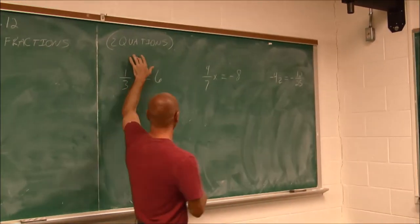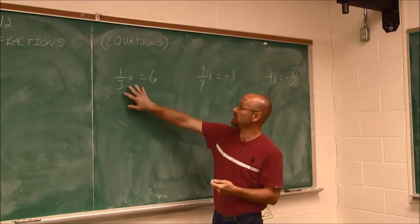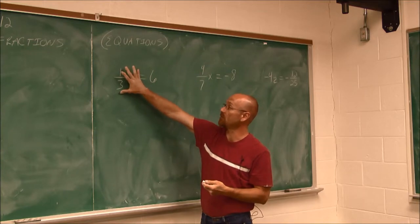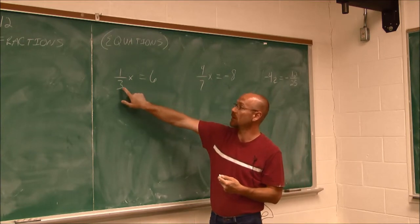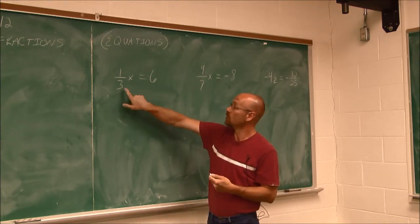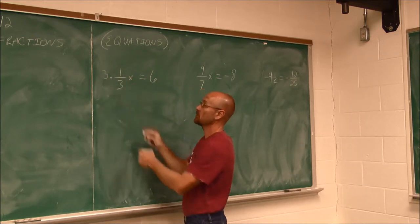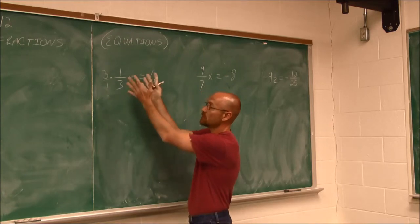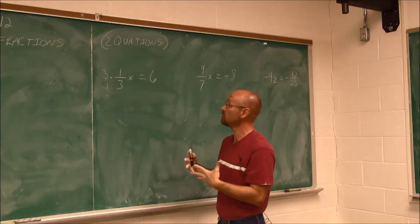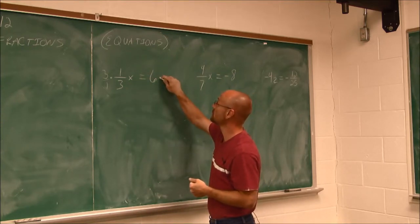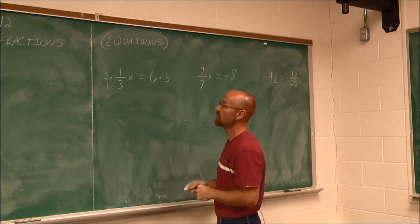So now we're going to learn how to use these tools and apply them to equations. Now equations that contain fractions. One way we can eliminate the fraction, if we see it in the most simplest form, where we have a fraction times a variable equals a number, is we can multiply by the reciprocal of the coefficient. What's the reciprocal of 1/3? It would be 3. Because if I multiply 3 times 1/3, everything's going to reduce to 1. But I always have to remember, when it comes to equations, a tool we learned before is what you do to one side, you must do to the other. So if I'm multiplying this side by 3, I have to multiply this side by 3 as well.